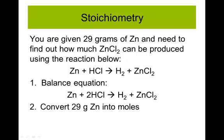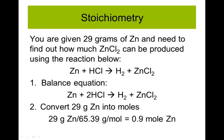The next step is to convert 29 grams of zinc into moles. To do that, I need the molar mass from the periodic table: 65.39. So 29 divided by 65.39 gives me 0.9 moles of zinc — almost one mole of zinc.